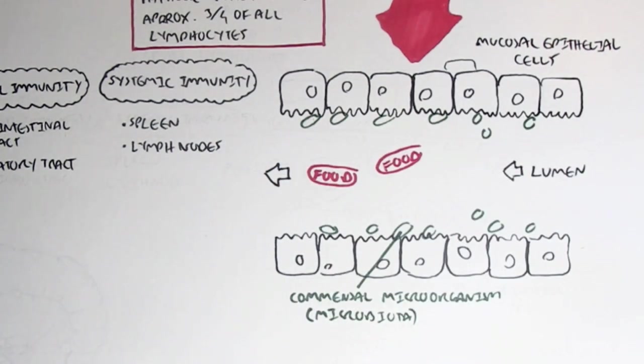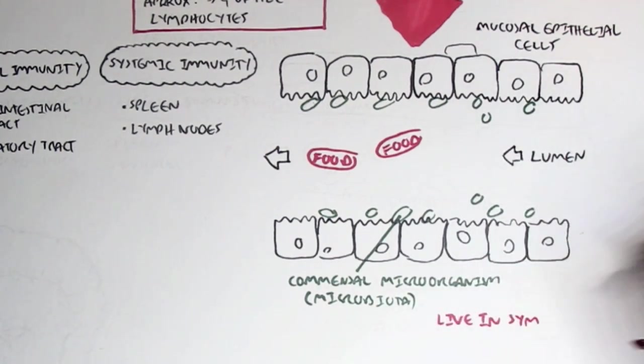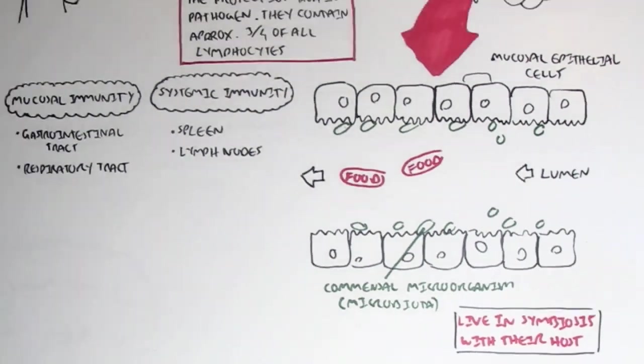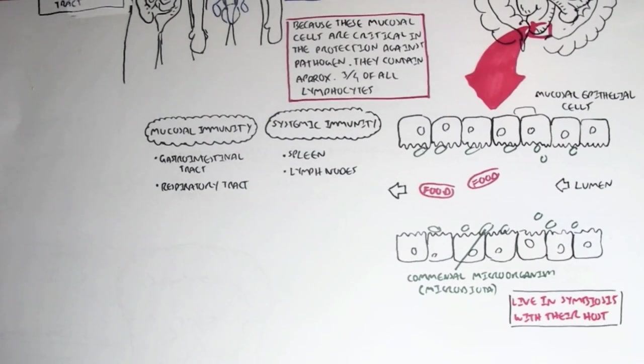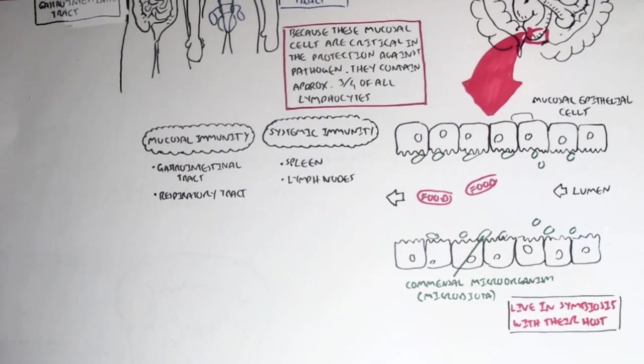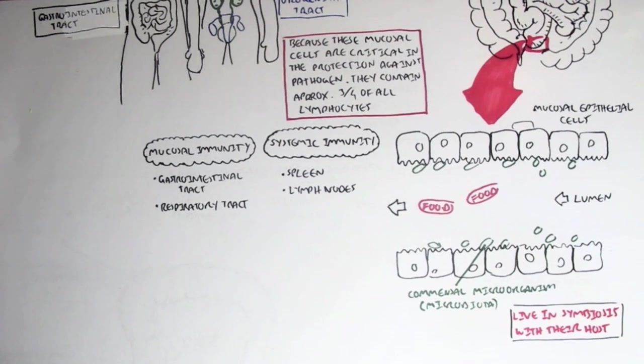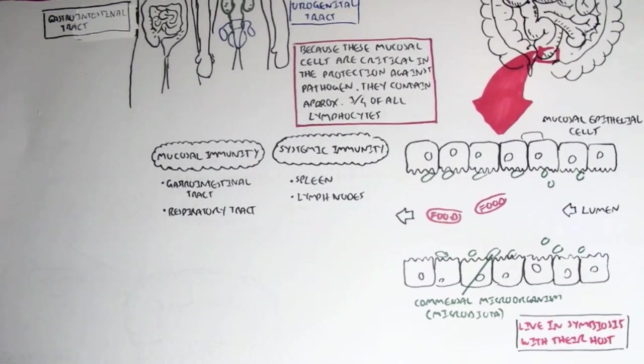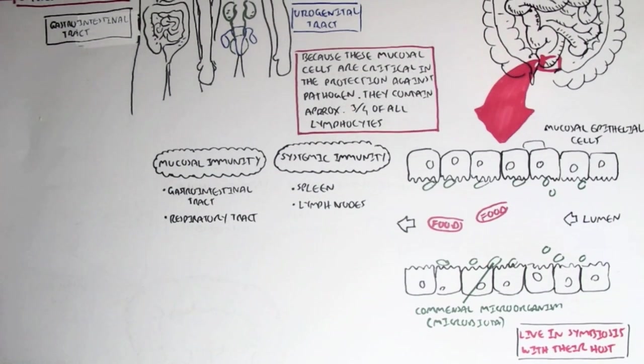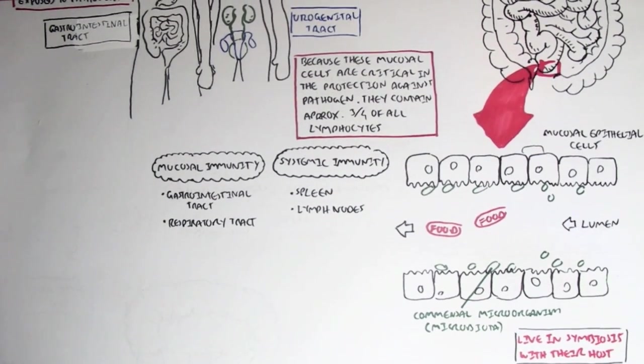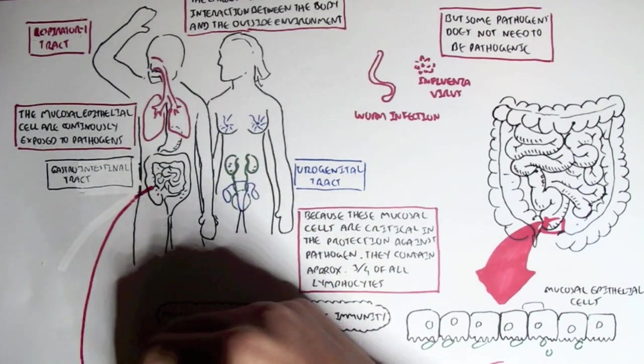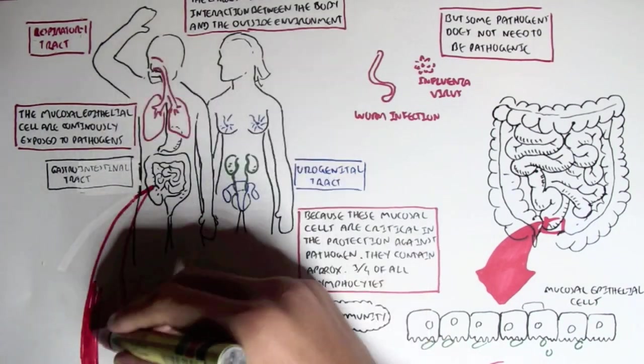They are also referred to as microbiota and they live in symbiosis with their hosts. But they can be pathogenic if they leave the area where they usually live in symbiosis with their hosts, such as if these commensal microorganisms move to the heart for example, then they will create an immune response. Therefore they must usually always stay in the gut.